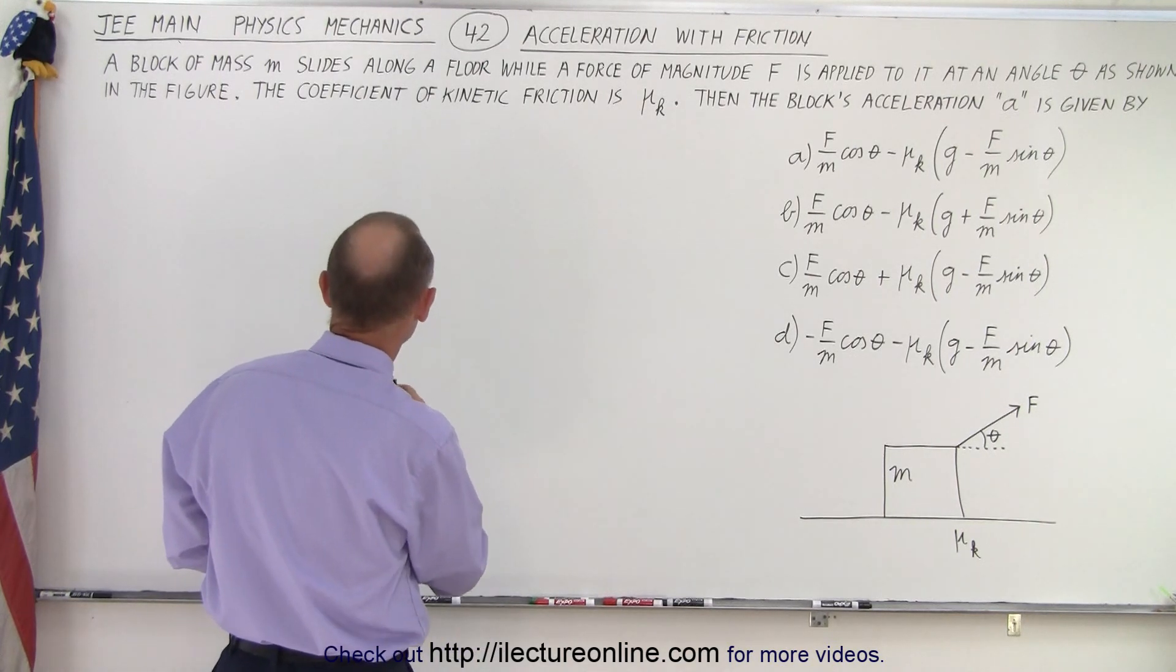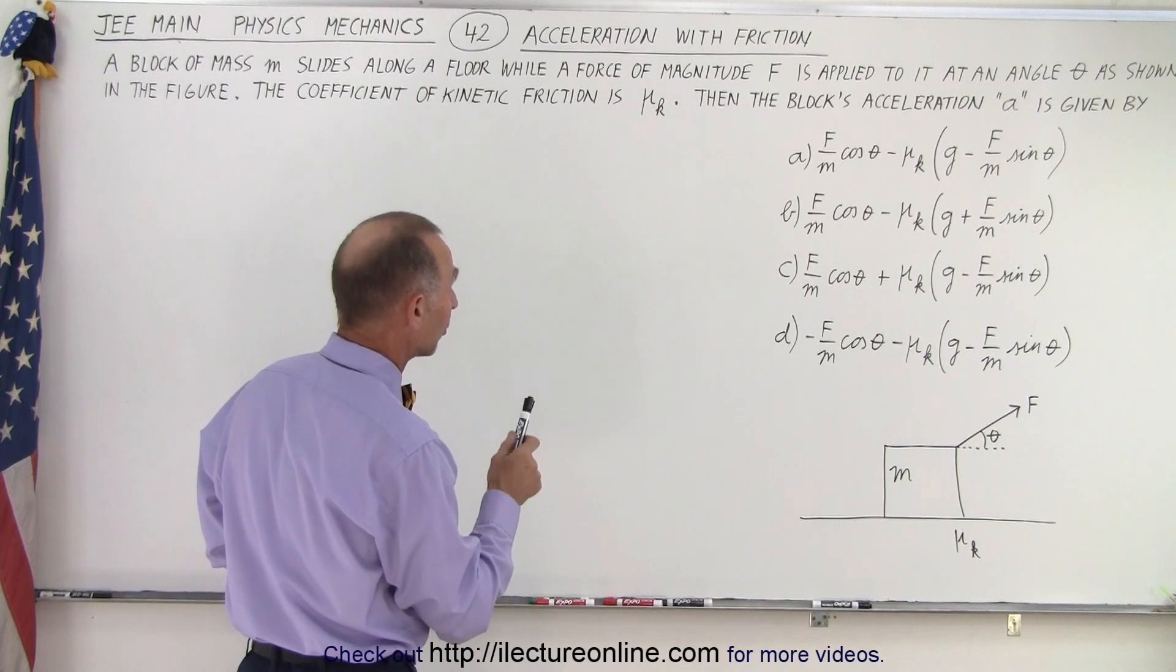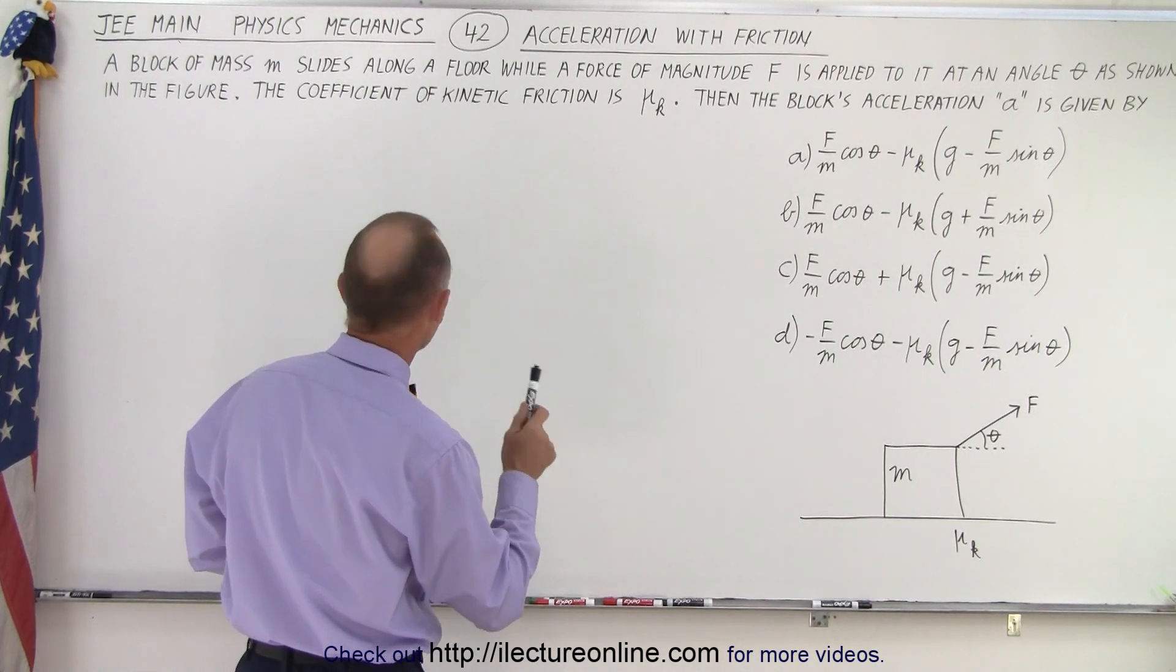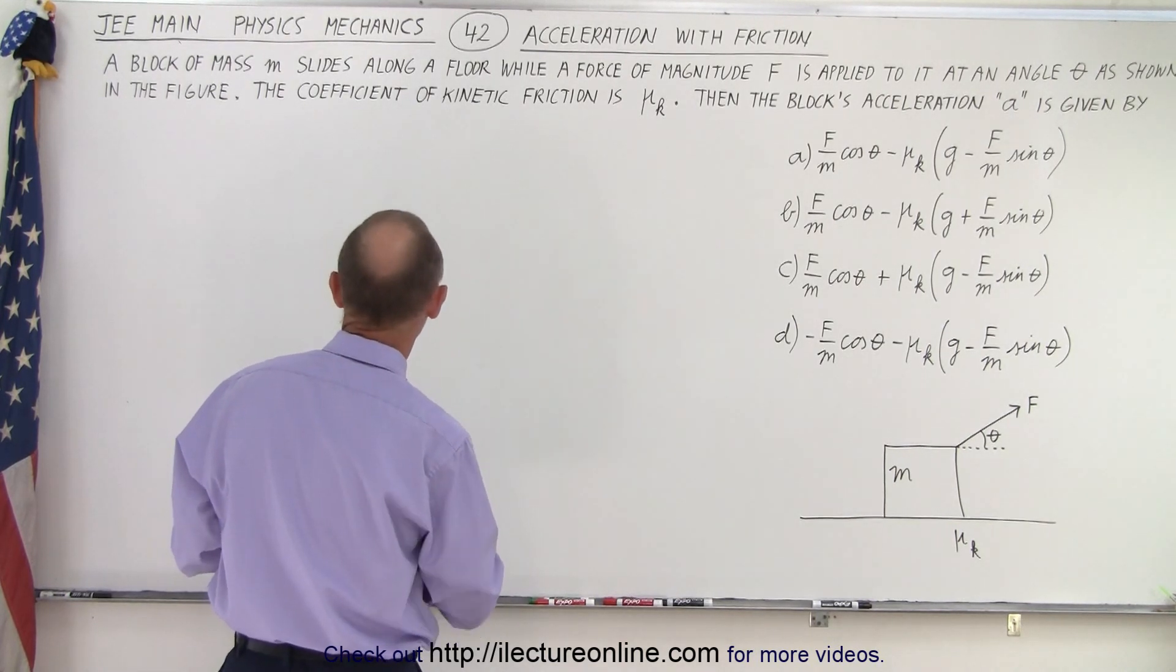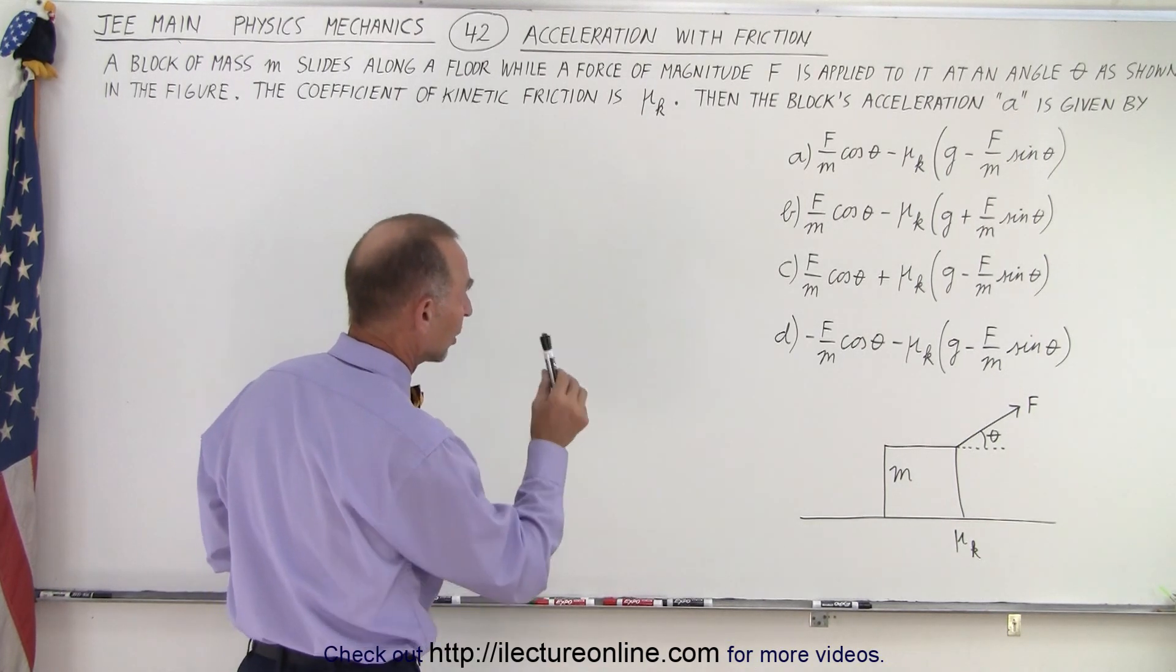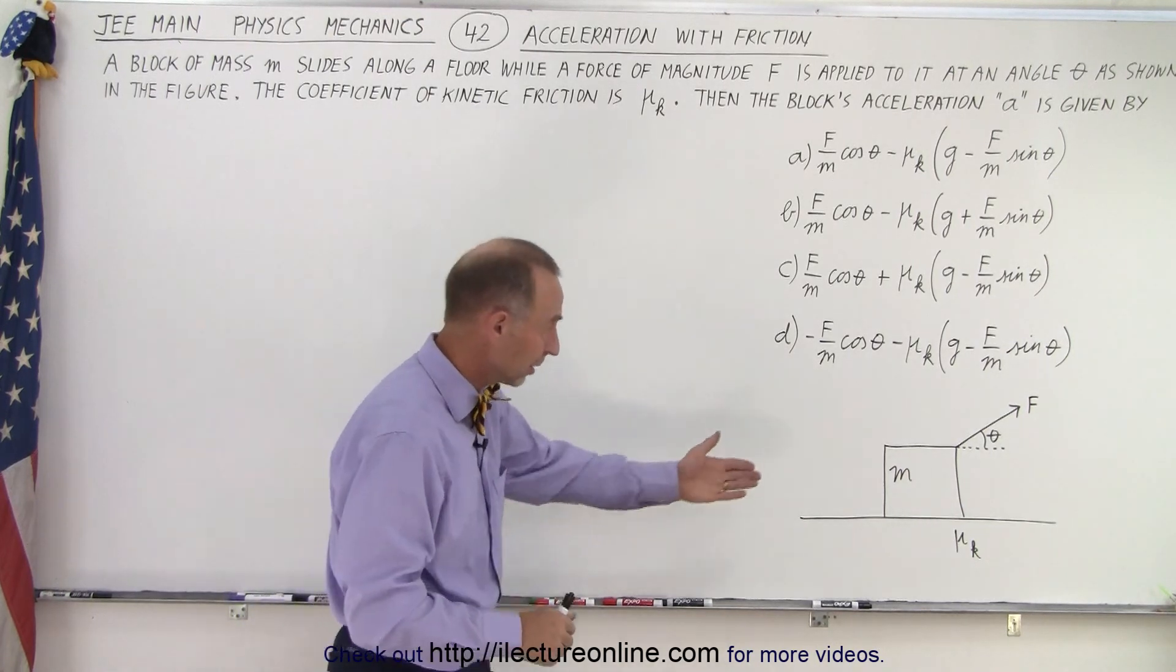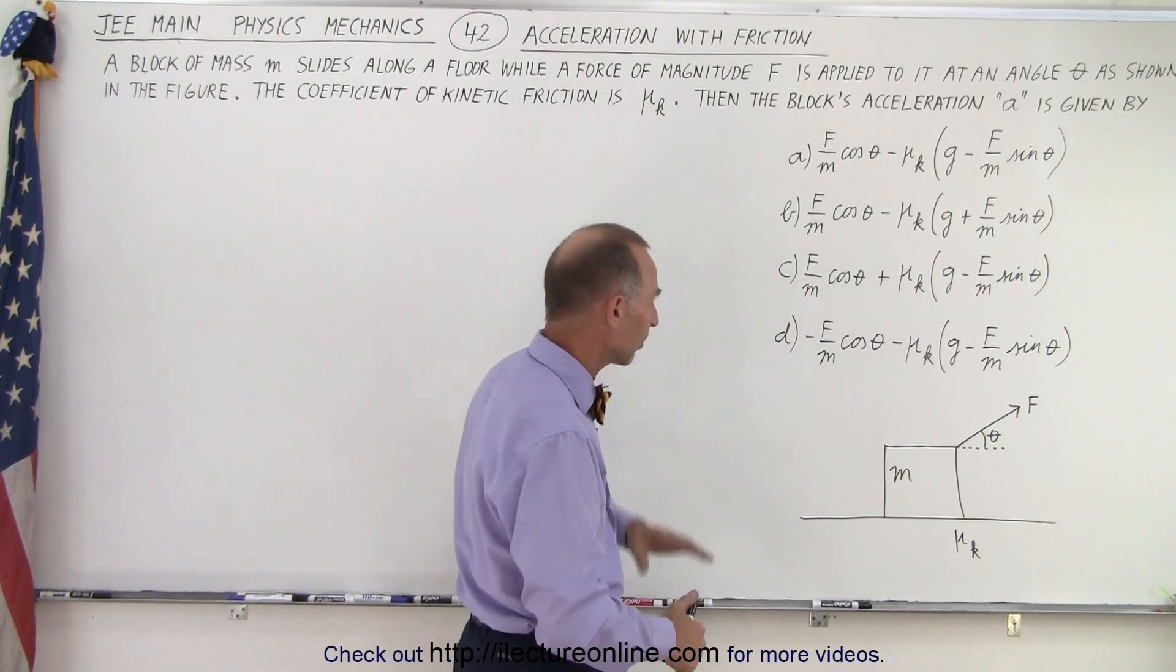A block of mass m slides along a floor while a force of magnitude F is applied to it at an angle θ as shown in the figure. The coefficient of kinetic friction is μ_k, then the block's acceleration a is given by—and so they did give us a figure here it is and here are the four possible answers.